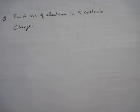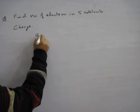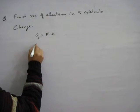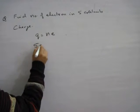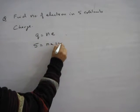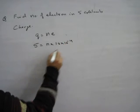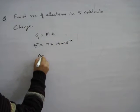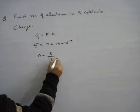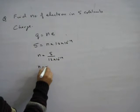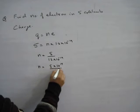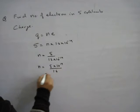Here is the formula: Q is equal to N times e. With Q = 5 Coulombs and e = 1.6×10⁻¹⁹ Coulombs, we solve for N.